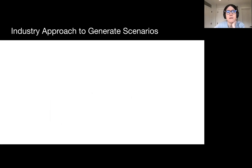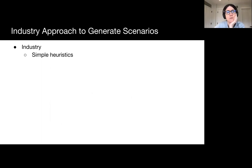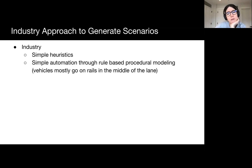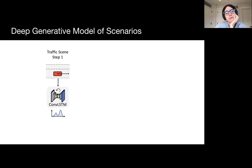Let me first show what the industry does, and then what we do. In the industry, one of the most common approaches is heuristics: vehicles go in the middle of the road, always facing the same direction as the lane, etc. Or very simple automation with procedural modeling or rule-based systems. This doesn't give you the real diversity of the real world. So we need something more sophisticated.